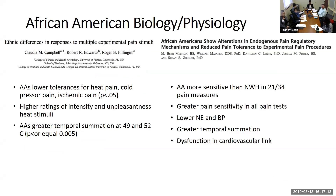This first study by Campbell and colleagues examined ethnic differences in responses to multiple experimental pain types. They included 120 participants — 62 African American and 58 white. They found that African Americans had lower tolerances for heat pain, cold pressor pain, and ischemic pain; higher ratings of intensity and unpleasantness for heat stimuli; and a greater temporal summation at 49 and 52 degrees Celsius for heat pain.